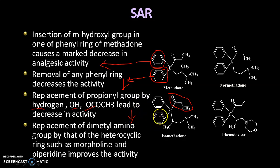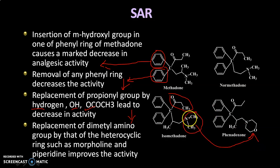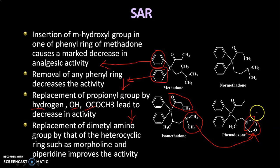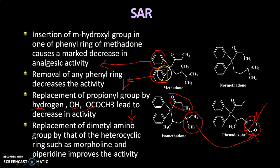The last SAR point is that cyclization of the dimethylamino group into a heterocyclic ring results in an improvement of activity. Here you can see that the dimethylamino group has been cyclized into a morpholine ring. So cyclizing this dimethylamino group into a heterocyclic ring — specifically the morpholine ring — leads to an increase in activity. This is the only substitution in this series that increases activity.